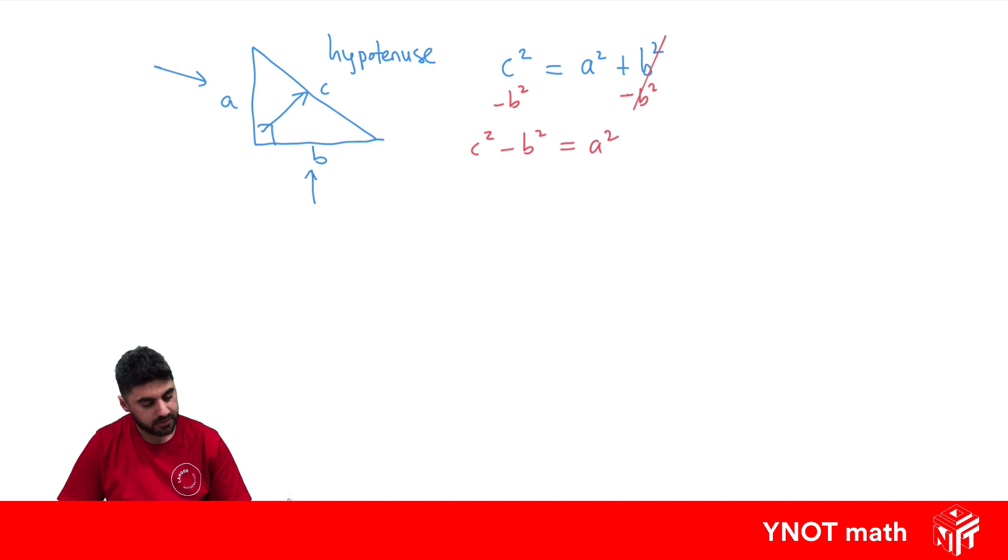So let's use that in an example. If we have a right angle triangle where we know the hypotenuse is 5 and one of the other shorter sides is 4, what's the value of this other shorter side, which we'll call X?